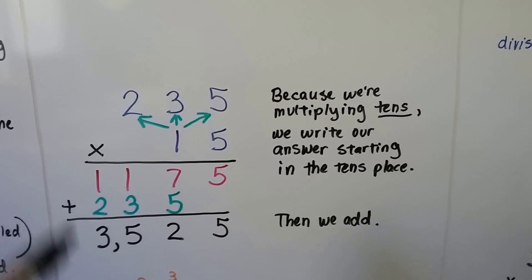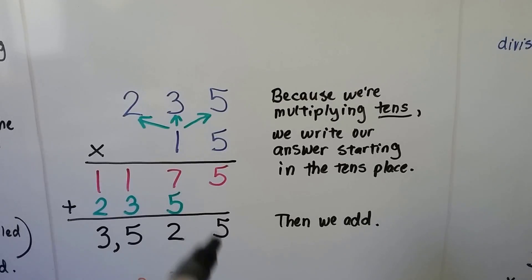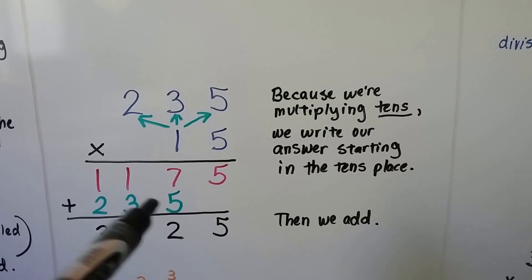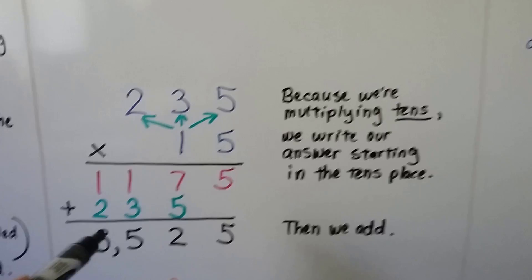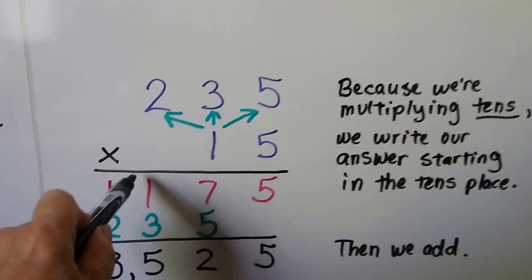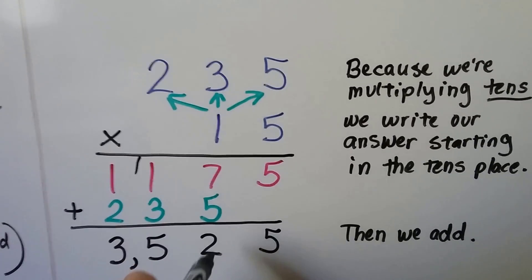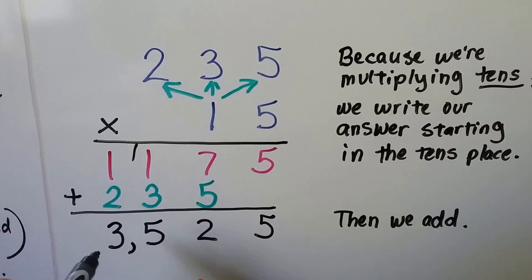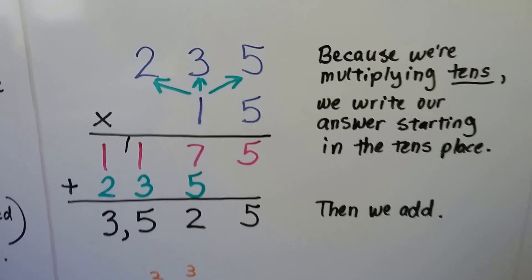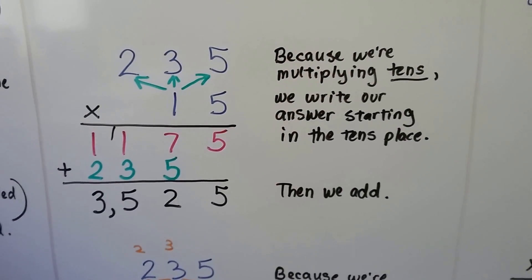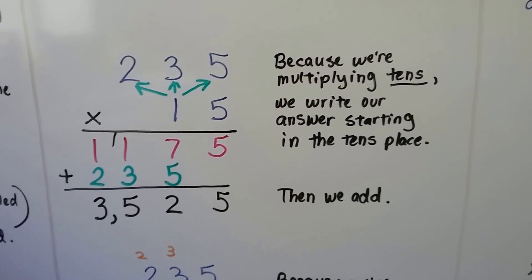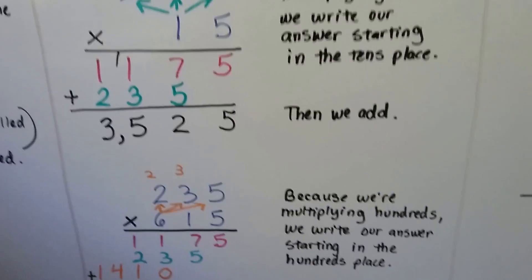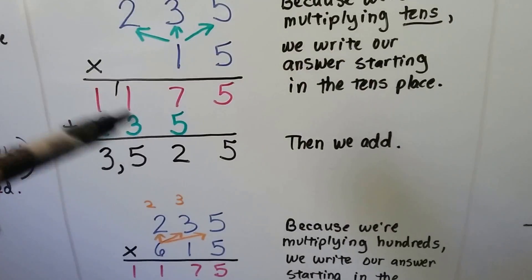We draw our line, put a plus sign, and add these together. Five and nothing is five, five and seven is twelve — we regrouped, put a one up, and put the two down. We have three, four, five, then two, three — we have three thousand five hundred twenty-five.